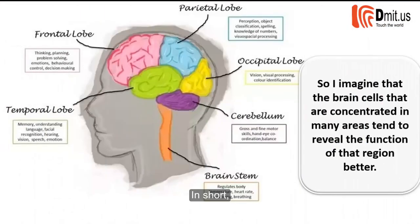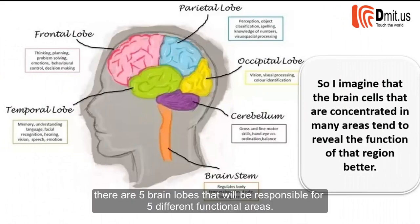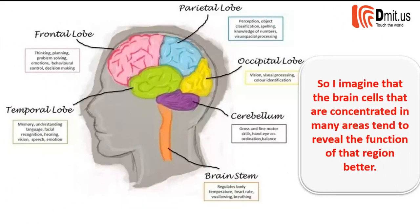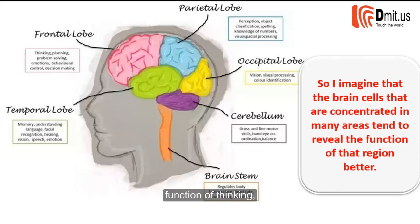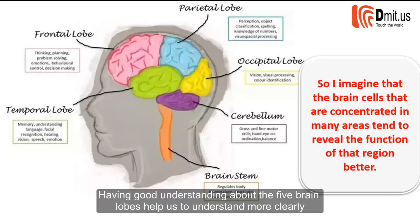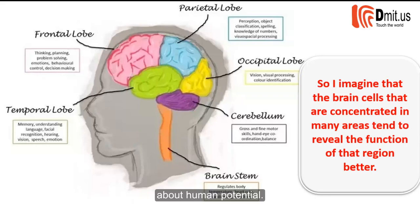In short, there are five brain lobes responsible for five different functional areas: the function of awareness, the function of thinking, the function of movement, the function of sound, and the function of image. Having a good understanding of the five brain lobes helps us understand more clearly about human potential.